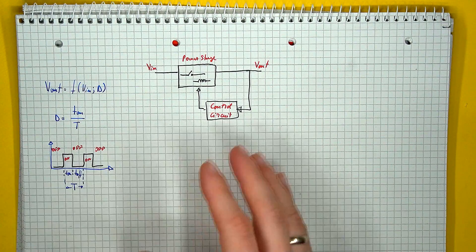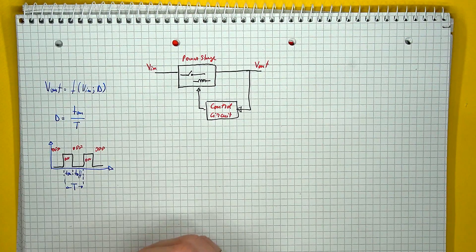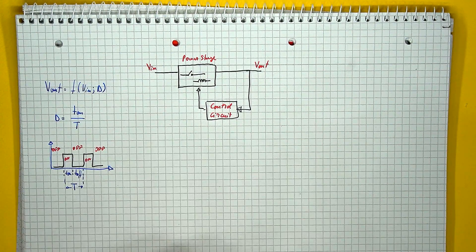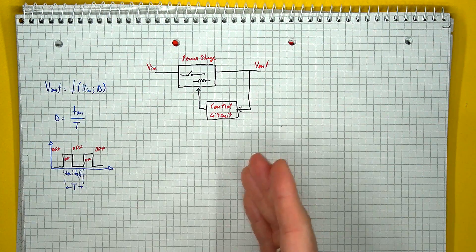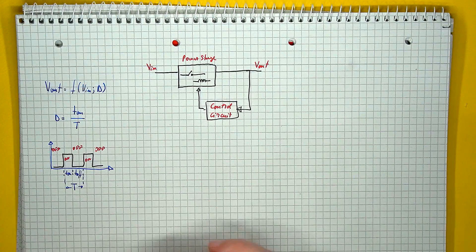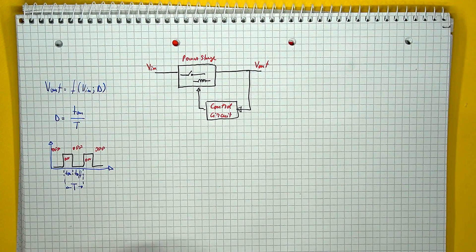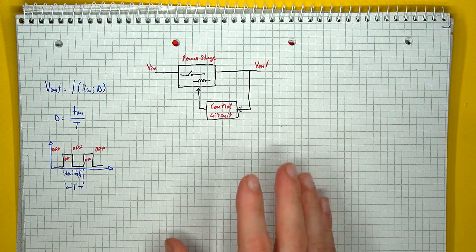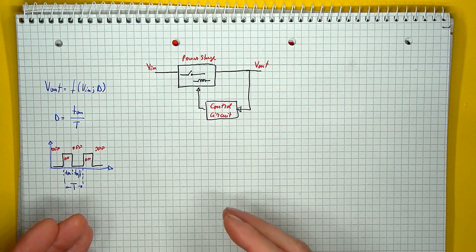Now, one important observation to be made here is that there is no frequency present in this function. In other words, nobody is forcing you to keep the converter running at one frequency or another. The only thing you actually need to control is the ratio of on to off time. So finally, to achieve this, there are two main methods: pulse width modulation and pulse frequency modulation.